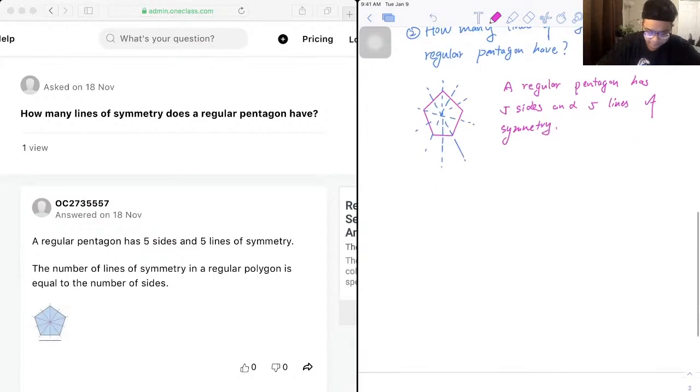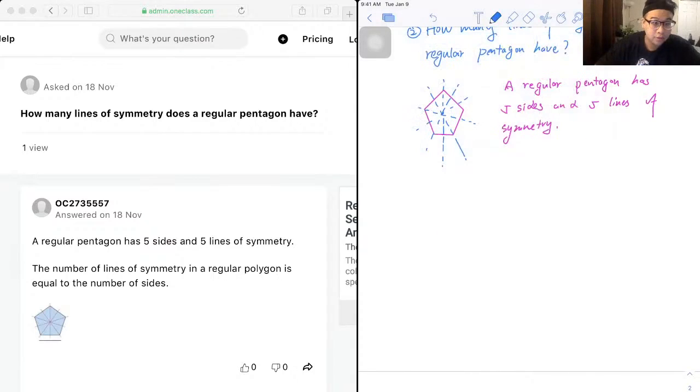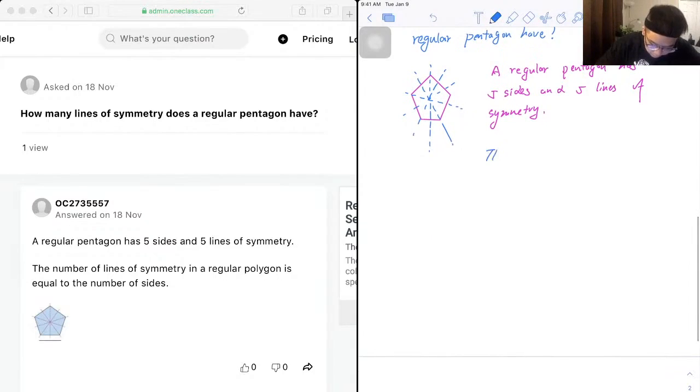And also remember the number of lines of symmetry in a regular polygon is equal to the number of sides.